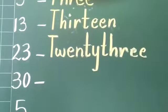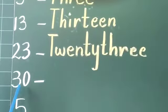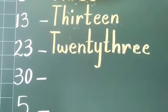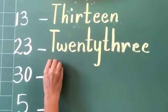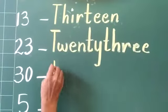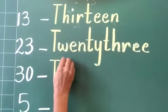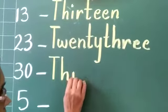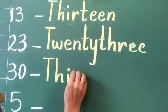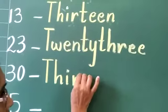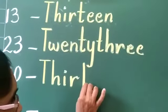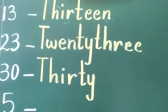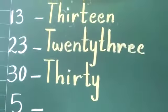The next number is 3, 0 — 30. You are going to write the spelling of 30 here. T, H, I, R, T, Y — 30.